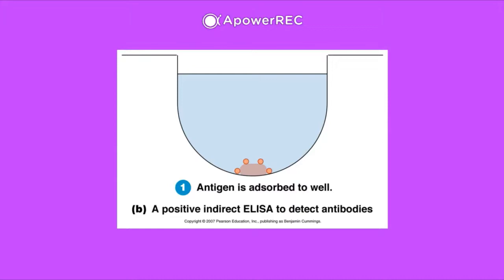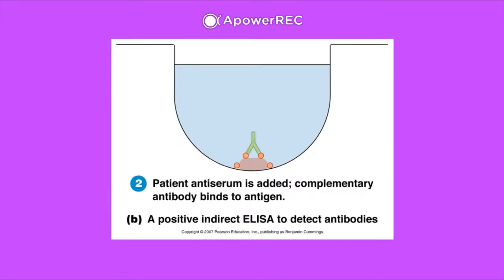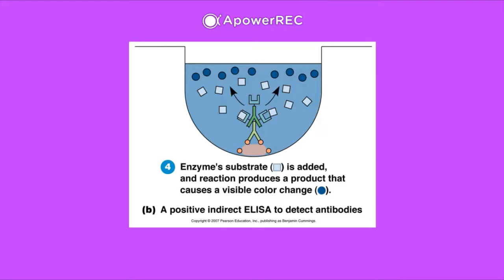Looking at the visual steps: in step one, an antigen is adsorbed onto a well — this could be HIV antigens, an allergen, or any target molecule. Next, the patient's antiserum is added; if the patient has antibodies present, they bind to this antigen as the primary antibody. Then the secondary antibody is added, whose target is that primary antibody.